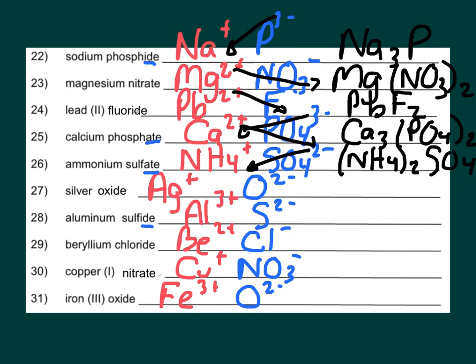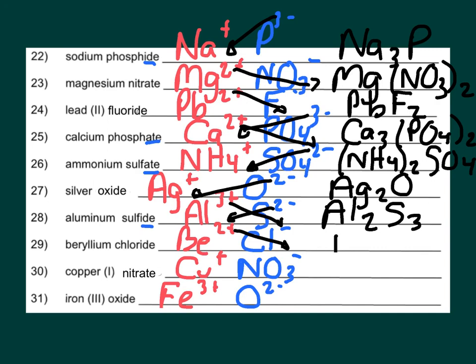Next, silver oxide. The 2 has to go down there, that's Ag2O. I have two silvers, I have one oxygen. Next, aluminum sulfide. I criss-cross, I get Al2S3. I have two aluminums, I have three sulfides. Next, beryllium chloride. The 2 has to go down there, I have BeCl2. One beryllium, two chlorides. Copper one nitrate, nice and easy. CuNO3. If the number of the charges of both of them is the same, I don't have to criss-cross anything.